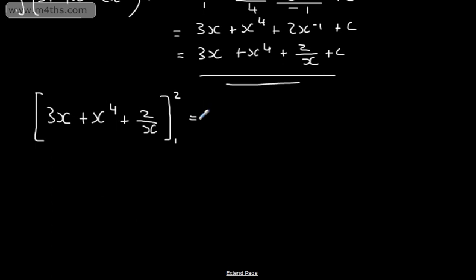Substituting in for 2, we're going to have 3 lots of 2, which is going to give me 6, plus 2 to the power of 4, which is going to give me 16, plus 2 over 2, which is 1. We'll then subtract that from that.